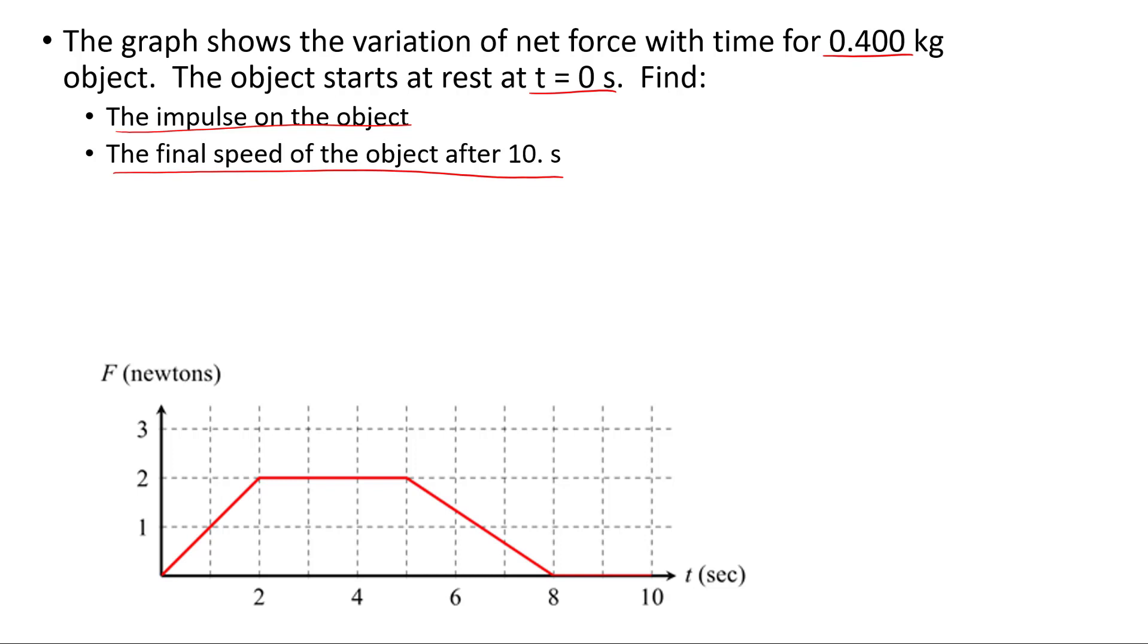The graph shows the variation of net force with time for a 0.400 kilogram object. The object starts at rest at T equals 0 seconds. Find the impulse on the object for the whole interval and the final speed of the object after 10 seconds. We know that impulse is the area under the curve. So I'm going to break this down. I'm going to call this J1, this is going to be J2, this is going to be J3.